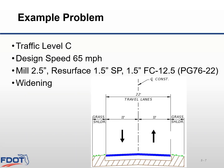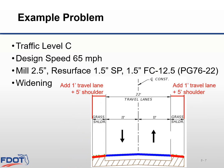Let's look at an example problem. We have an existing two-lane, two-way road, traffic level C, design speed of 65 miles per hour, with 11-foot travel lanes and unpaved shoulders. The proposed resurfacing is to mill 2.5 inches and resurface with 1.5 inches of Superpave and 1.5 inches of FC 12.5 with PG 76-22. The existing grass shoulders are stabilized but not paved. For our project, we want to widen our travel lanes and add some paved shoulders. We're going to add 1 foot to the existing travel lanes and also pave 5 feet of the existing stabilized shoulder.